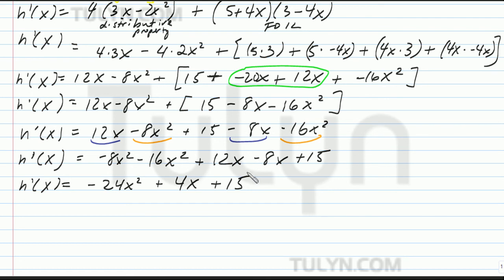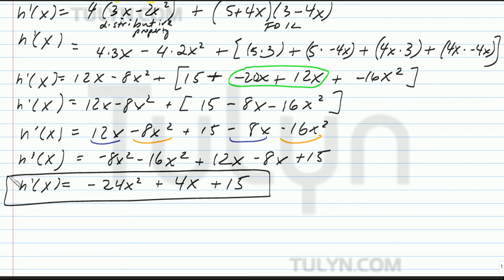Now notice that when you're using the product rule, you need to: number one, figure out which is your first function and which is your second function — f of x and g of x. After that, find their derivatives and then plug everything into the formula, where h prime of x equals f of x times g prime of x plus g of x times f prime of x. Or you could use the first option where you just FOIL first and then differentiate.